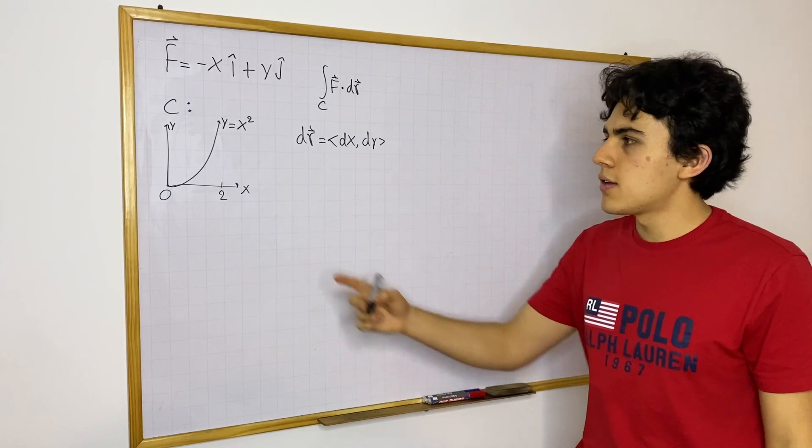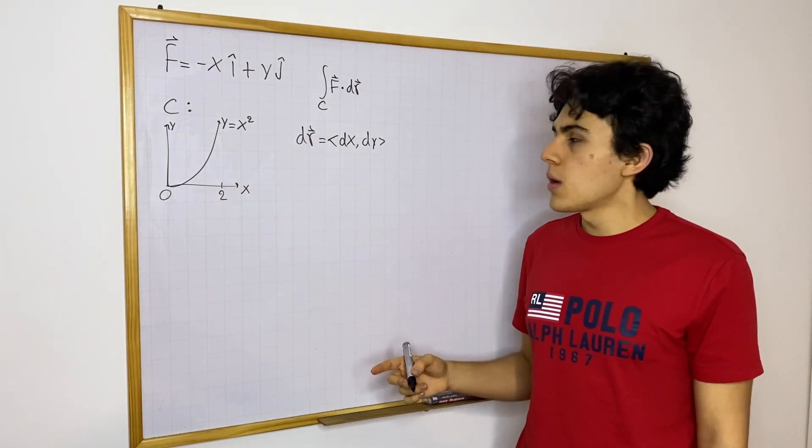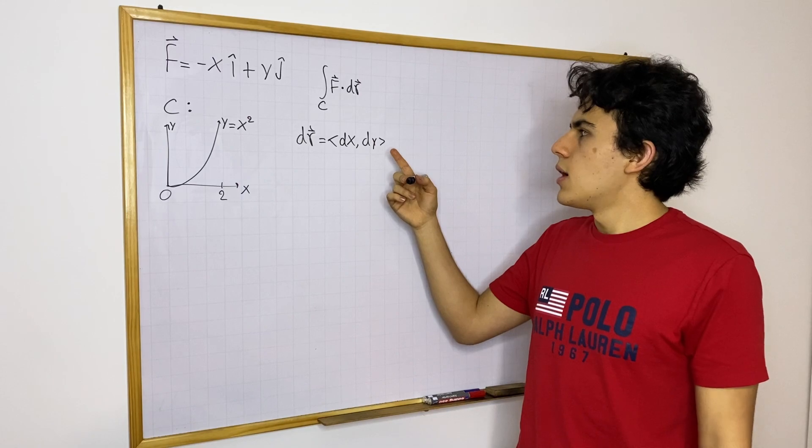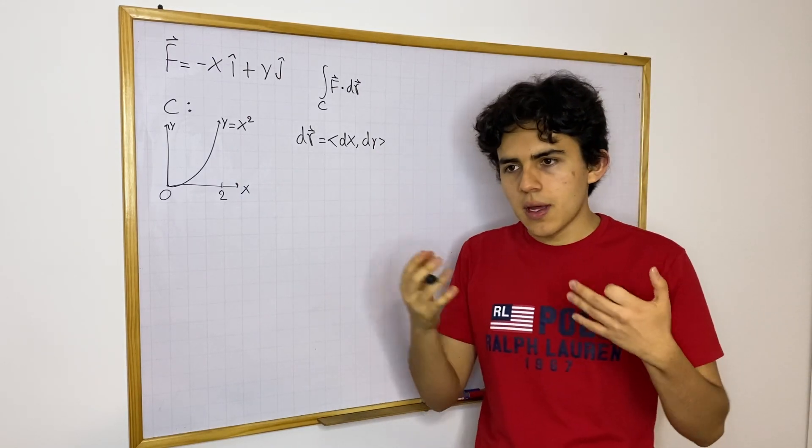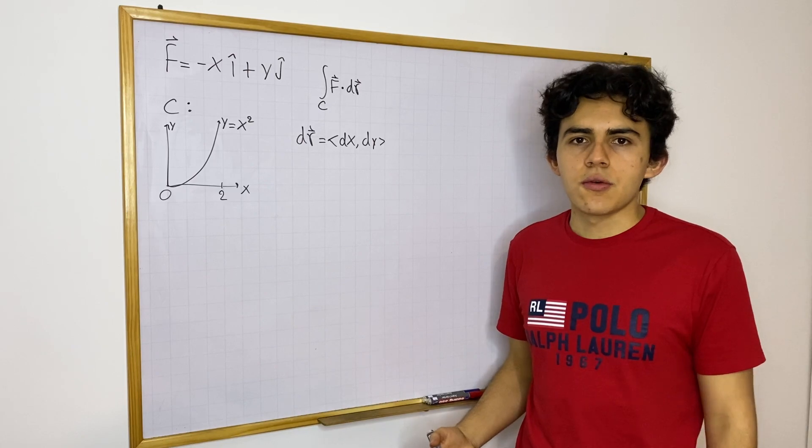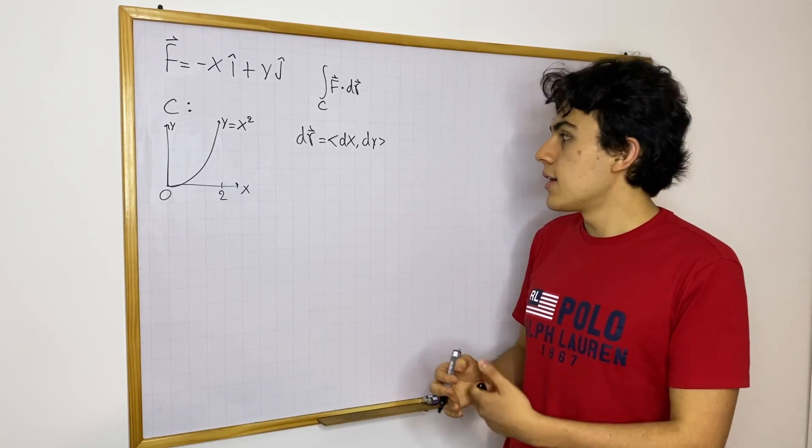And something we can do now that I'm using this is that, if we parameterize this curve, we're going to be able to find these differentials, and then we can put everything in terms of a parameter t, take a dot product, and then just take a definite integral as we normally would, and that's what I'm going to do.